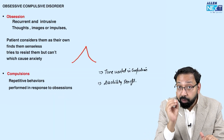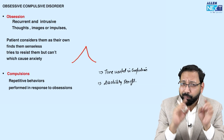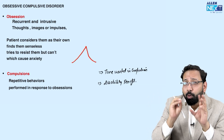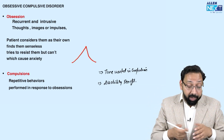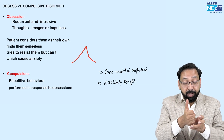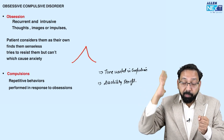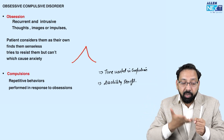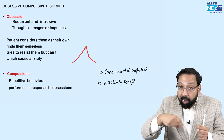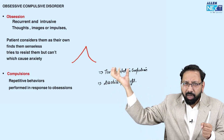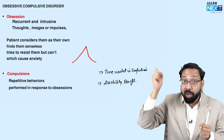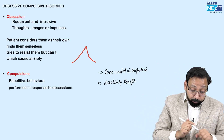Now discussing individual disorders, starting with OCD. Consider a person with OCD who has an obsession of contamination. Whenever they touch a pen, thoughts keep intruding: 'your hands are dirty, your hands are dirty.' These thoughts come again and again, intruding into the mind even while performing other activities. This is the definition of obsession.